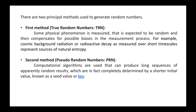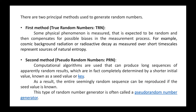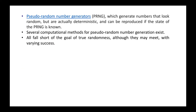The second category uses computational algorithms that can produce long sequences of apparently random results, which are in fact completely determined by a shorter initial value, also known as the seed value or key value. As a result, the entire seemingly random sequence can be reproduced if the seed value is known. This type is called a pseudo random number generator. Pseudo random number generators generate numbers that look random but are actually very deterministic and can be reproduced if the state of the generator is known.